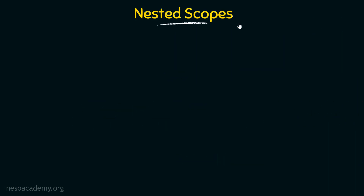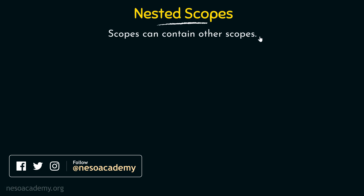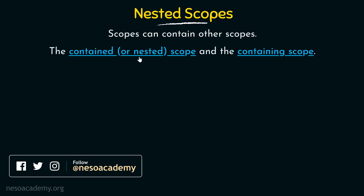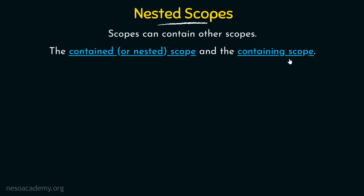Talking about nested scopes, scopes can contain other scopes. From the name 'nested' itself, we can understand what we mean. When we say nested, we are talking about scopes which are contained within other scopes. We have two kinds: the contained or nested scope, and the containing scope.